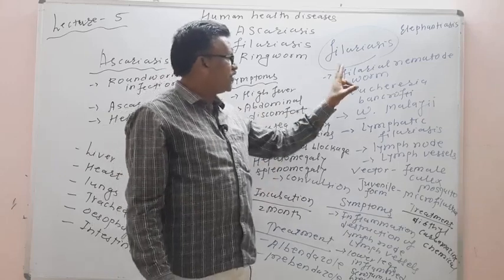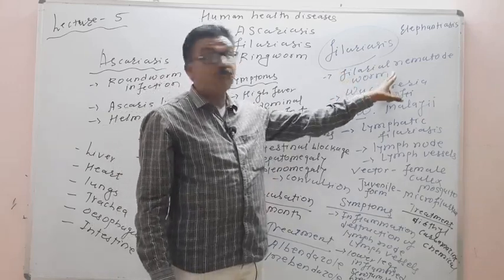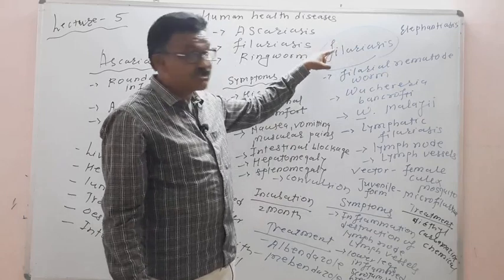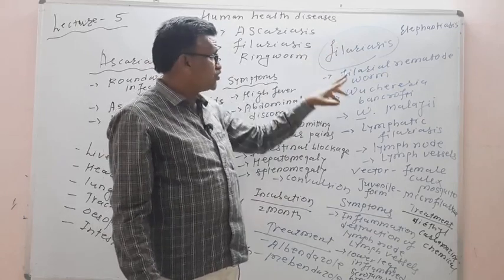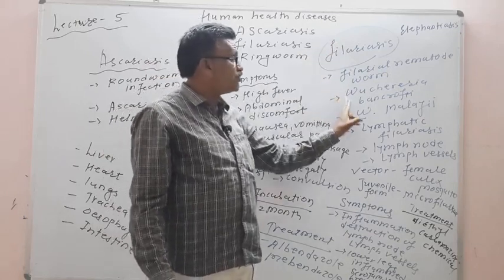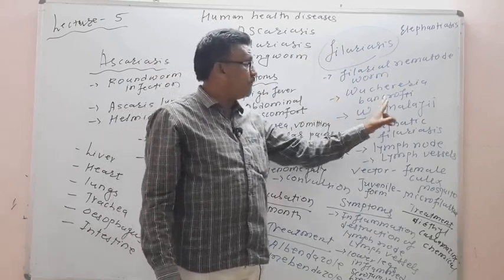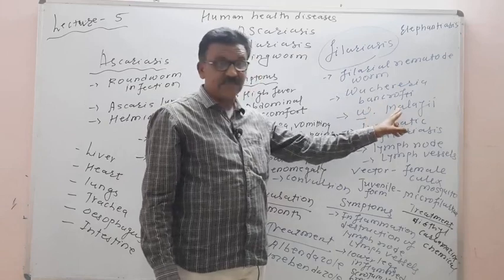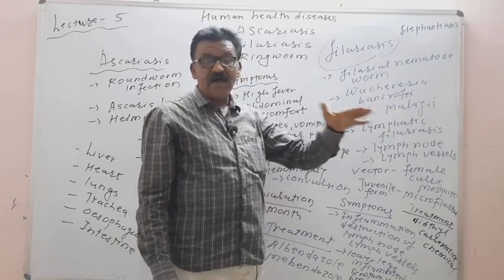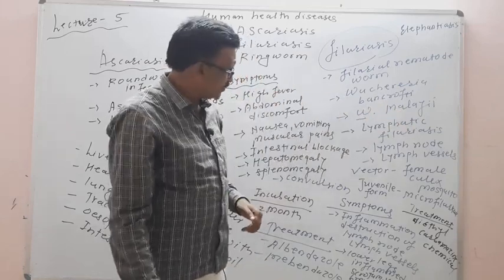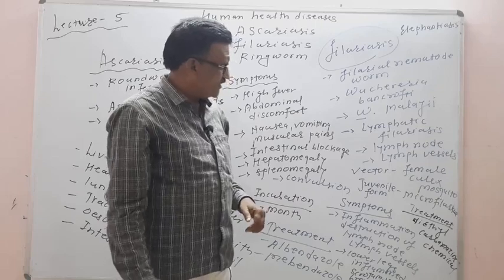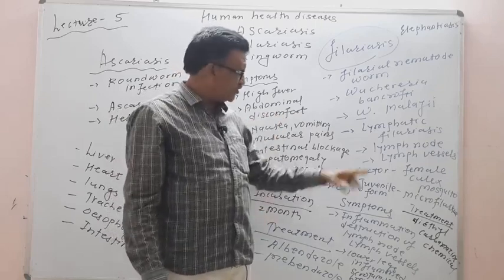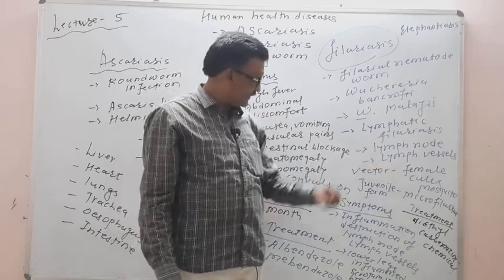Filariasis is caused by Wuchereria bancrofti and Wuchereria malayi — lymphatic filariasis — with the site of infection being the lymph nodes and lymphatic vessels.